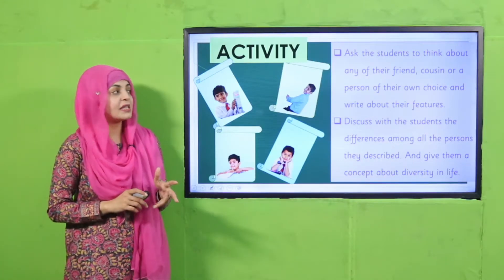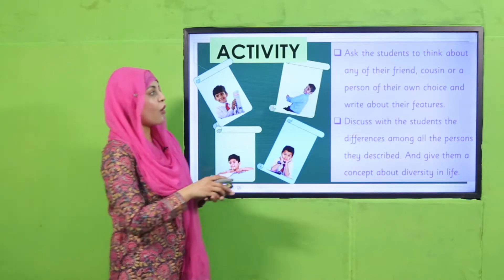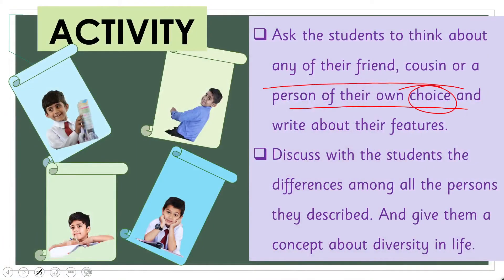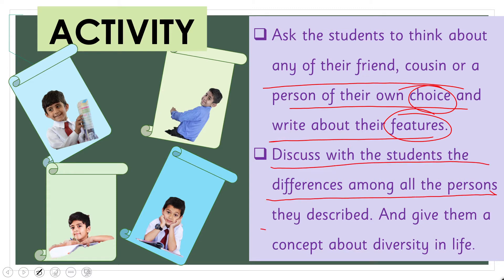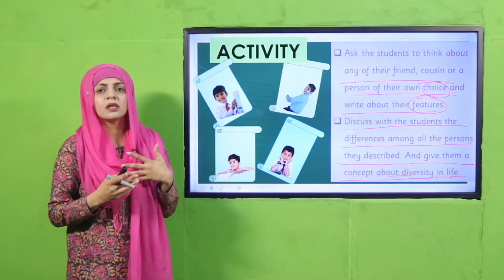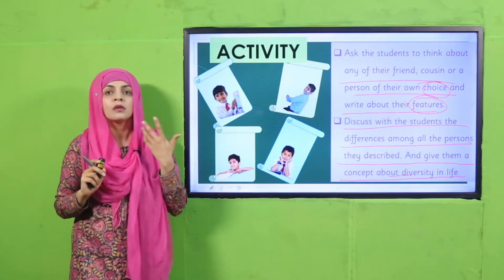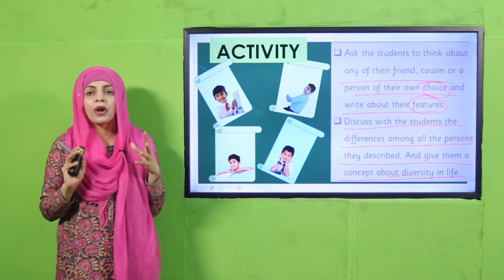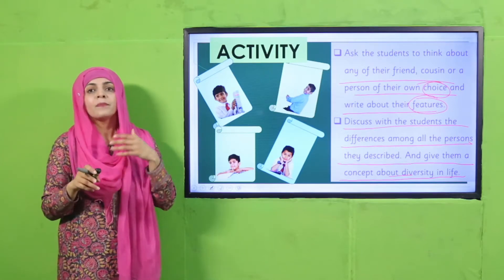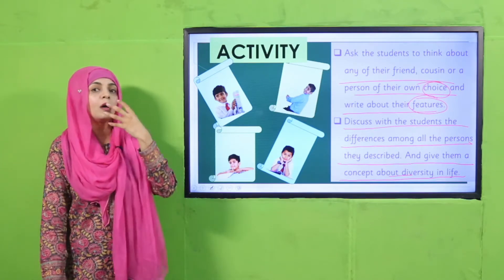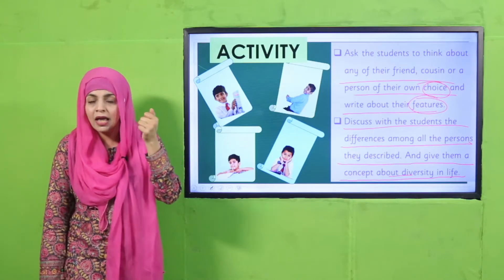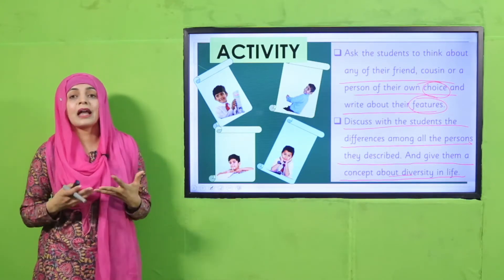Let's start the lecture with an activity. Think about any friend, cousin, or person of your choice and write about their features. Think about your friend, cousin, uncle, mother, or father — he is a boy or she is a girl, he is tall or short, she has brown hair, he has black hair, she has big eyes, he has small eyes.